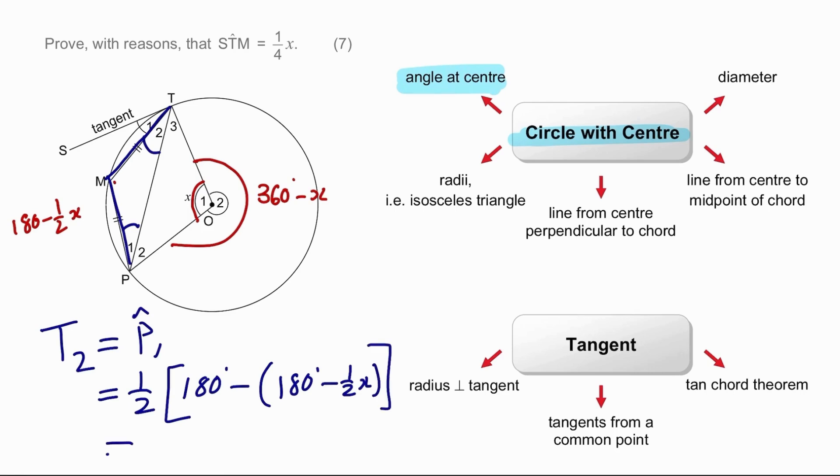So if we can sort this out, we will have our answer. 180 degrees can be eliminated because it adds up to zero. The two negatives give us a positive. So if we multiply that out, we get a quarter x. So the angle at P1 is a quarter x. And since the tan chord theorem links the angle we need to the angle that we have, we basically have our answer. We simply have to be able to justify it.